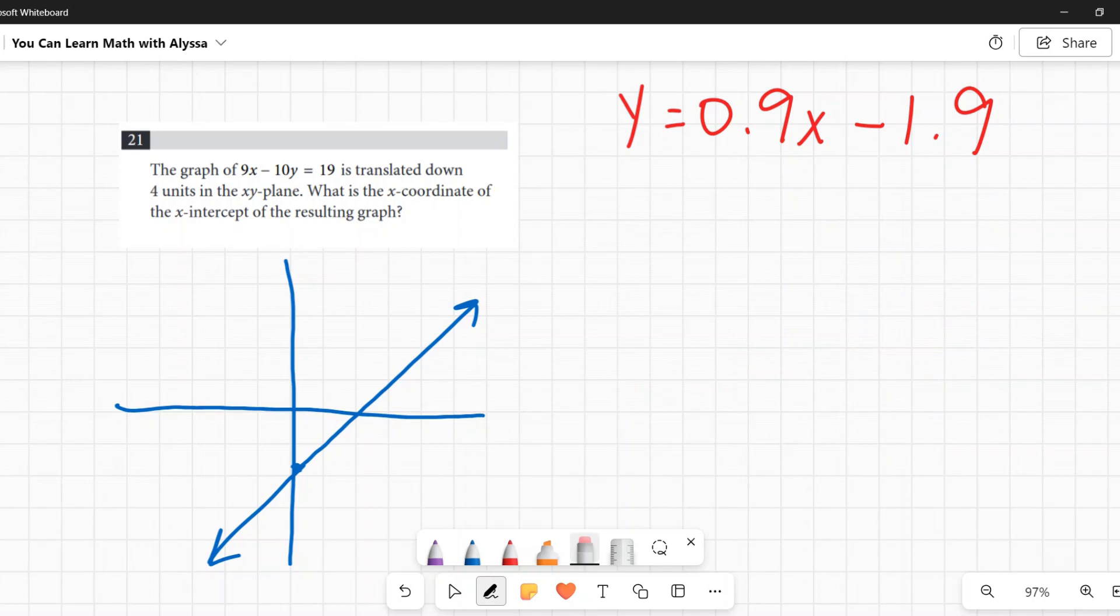This one is saying it's translated down four units. This negative 1.9 on the outside, that's what's moving it up and down. You can see right here, it moved it down 1.9. So we want it to go down four more. We're going to subtract four from that number, and that's going to move it down four more. So my new line is going to be y equals 0.9x minus 5.9.